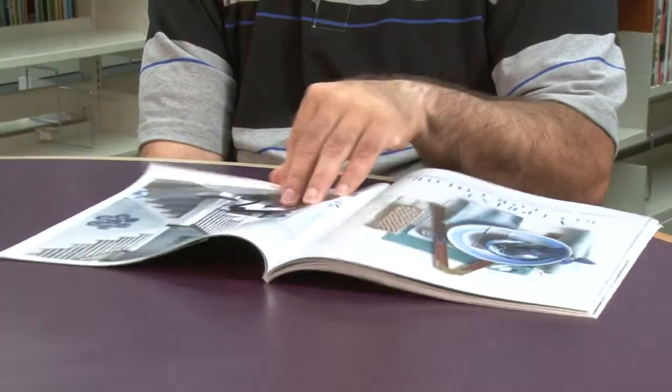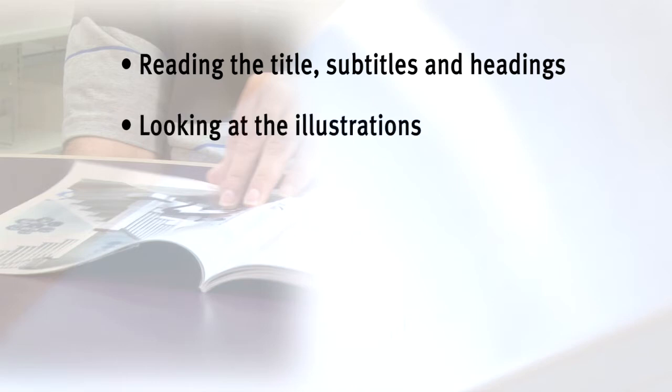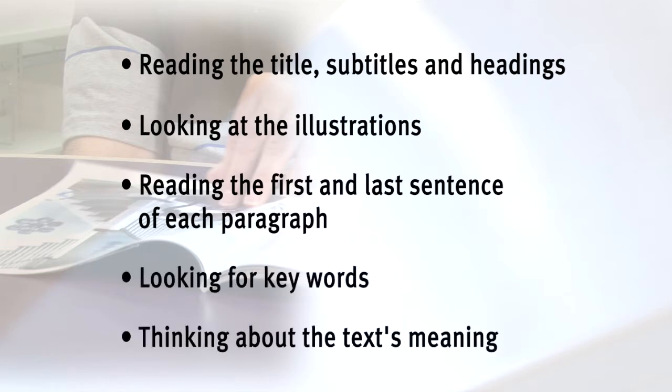Skimming is a comprehension strategy that helps readers get to know a text without reading it thoroughly. Good readers skim texts automatically, but struggling readers must be explicitly taught the steps involved in skimming, such as reading the title, subtitles, and headings, looking at illustrations, reading the first and last sentence of each paragraph, looking for key words, and thinking about the text's meaning.